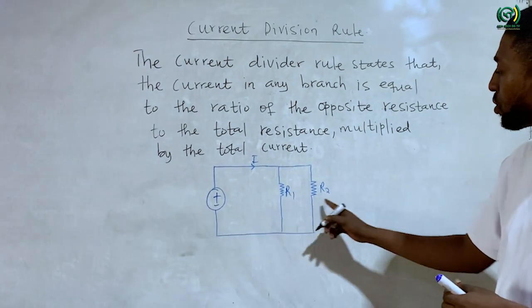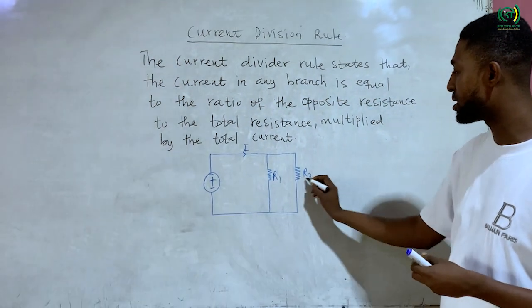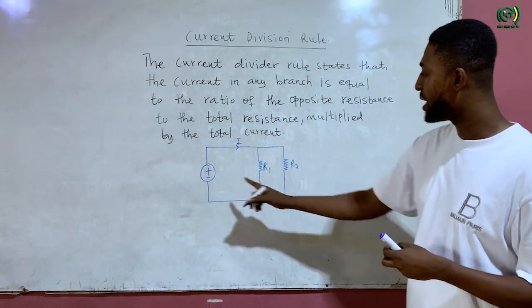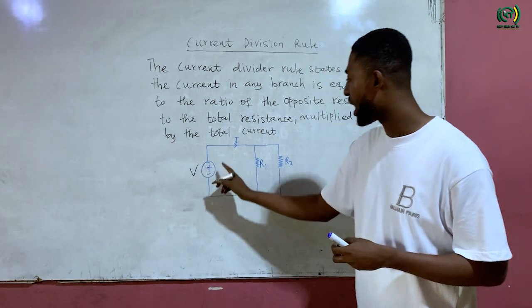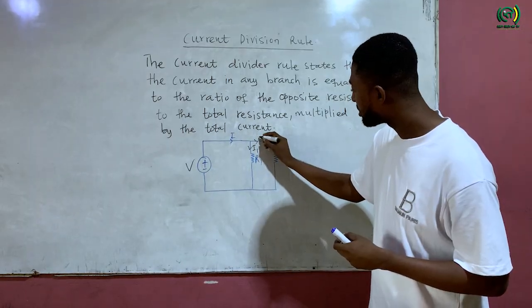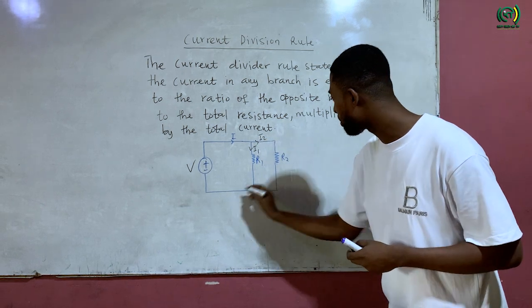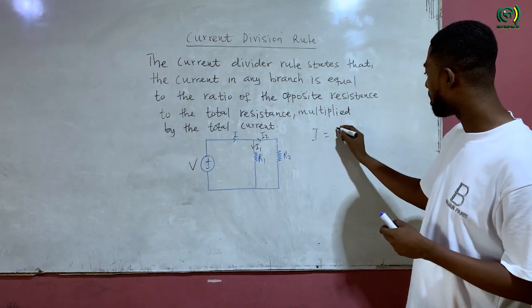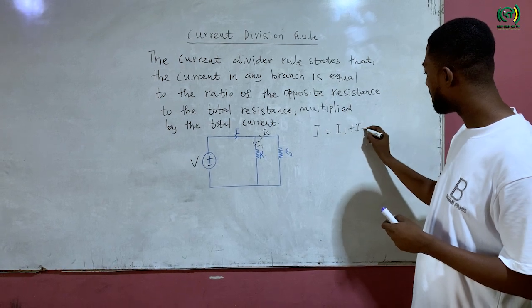There is a parallel connection because I1 is in parallel with I2. So when this voltage source drives a current which is I plus I2, from Kirchoff's current law, I is equal to I1 plus I2.